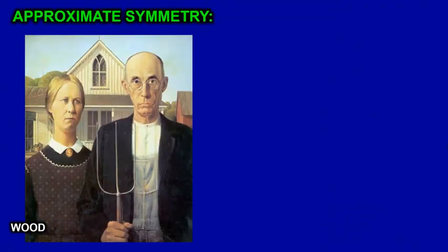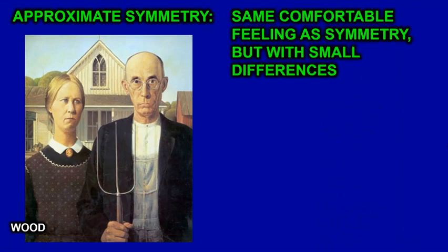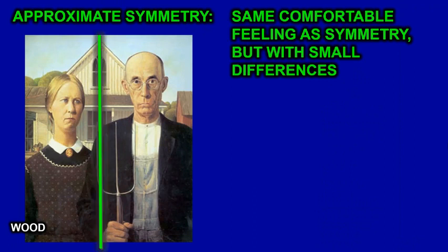Approximate symmetry is when it's almost the same on both sides — it has the same comfortable feeling of symmetry but with small differences. In American Gothic by Grant Wood, the man is obviously bigger than the woman, so there's a slight difference in size. But she has a pattern on her fabric that attracts the eye and gives it more visual weight. So even though she's smaller, she has an equal amount of visual weight because of the pattern on her fabric.